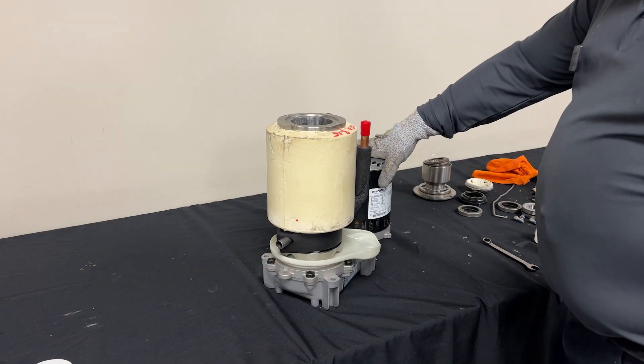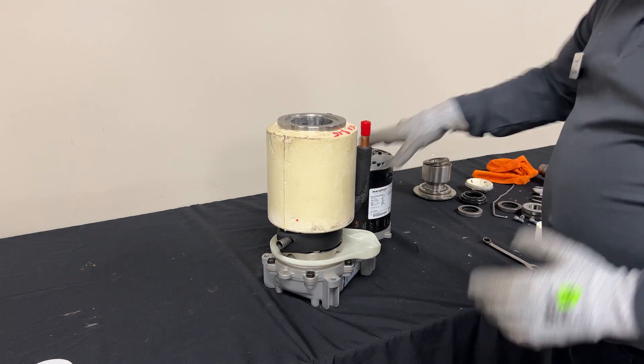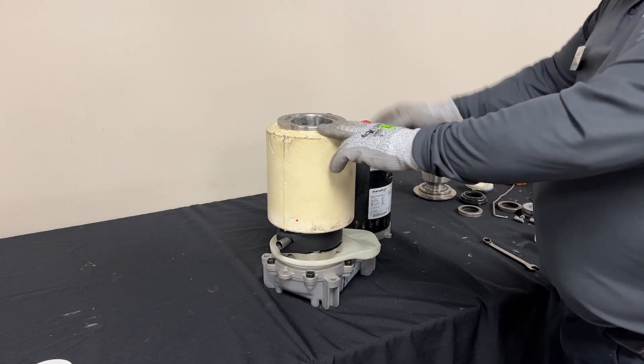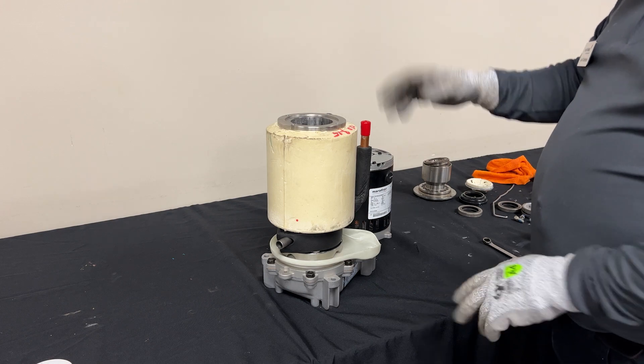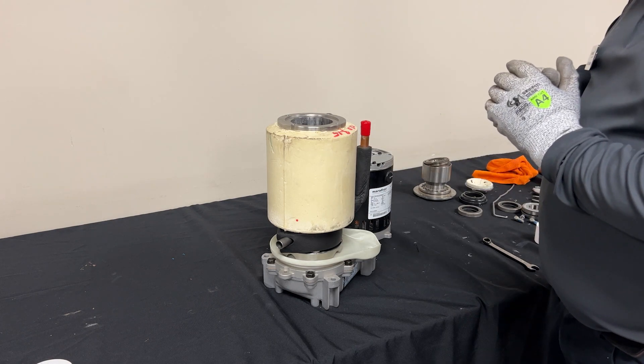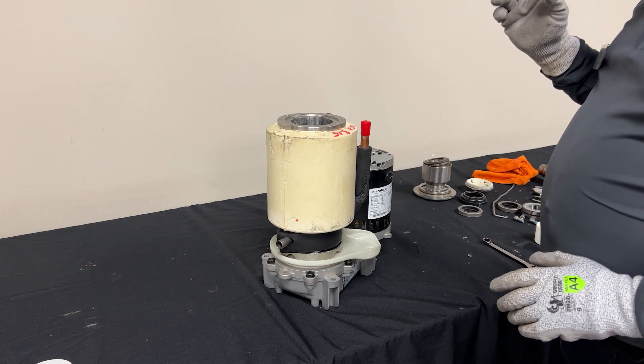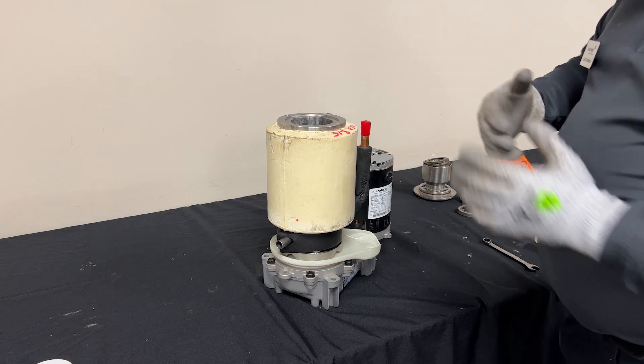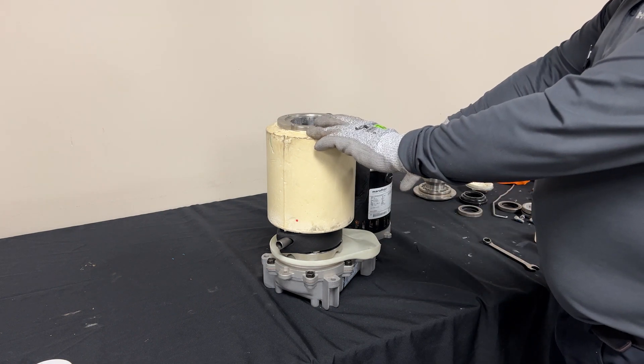To replace the gearbox, there's a couple different methods we're going to do. We've already removed this from the machine. The auger has already been removed. You can go back to a previous video showing how to remove the auger. So again, for visual purposes, it's best to be able to remove it.